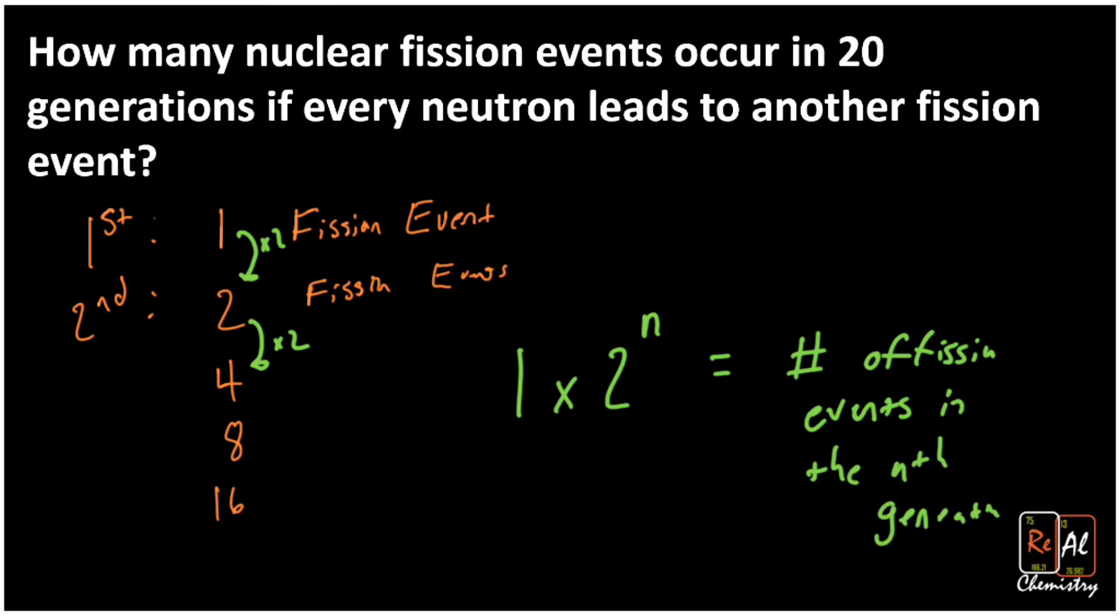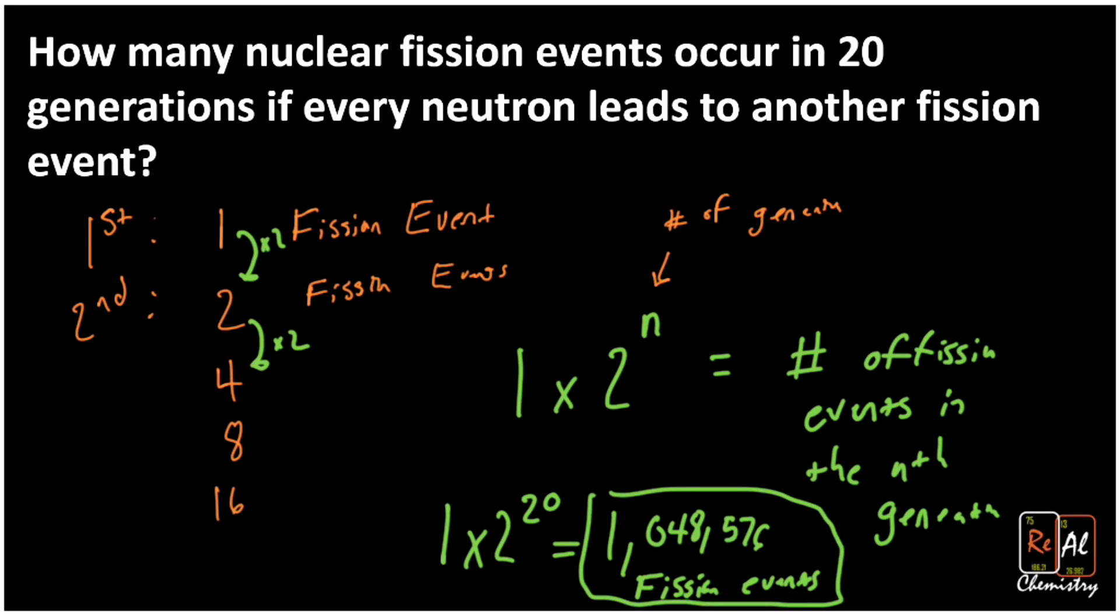Plug in the generations here. We want to know what we get when we plug in 1 × 2^20. When you do that, you get 1,048,576 fission events. That's for the 20th generation. That is a lot of fission events.